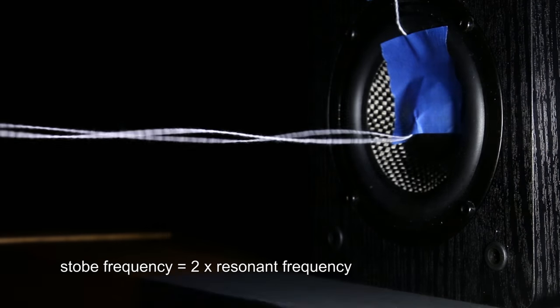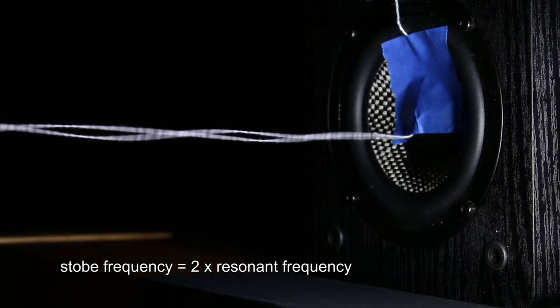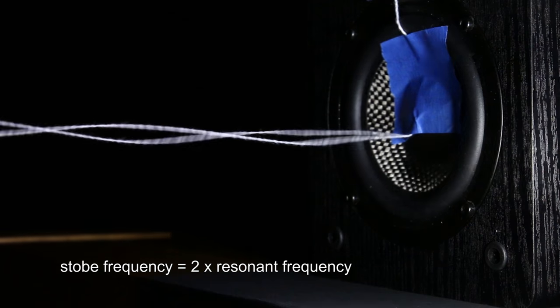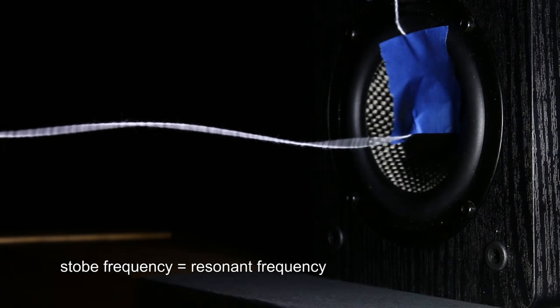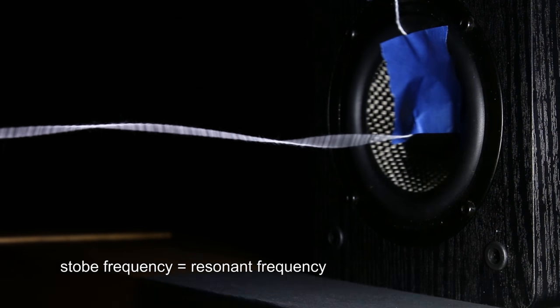Though the fundamental mode dominates, there are other modes present on any vibrating string. We can explore these with a simple cotton string fixed at one end and attached to a speaker on the other. In this case, the strobe is flashing at twice the frequency of the string resonance. If we match the strobe frequency, we see the wave in only one position.